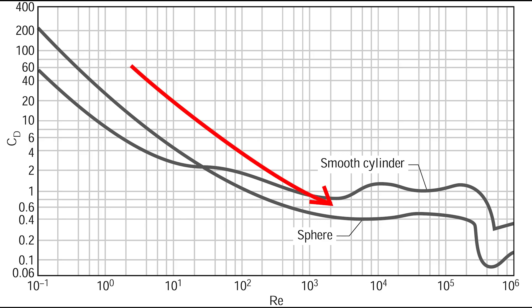A decrease in the drag coefficient does not necessarily decrease drag. The drag force is proportional to the square of the velocity, which offsets the decrease in the drag coefficient. But there is a significant drop in the drag coefficient, which is called drag crisis.